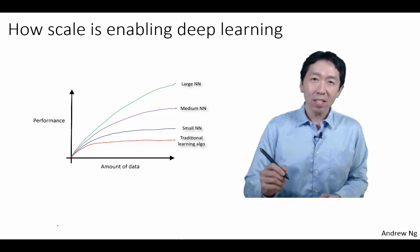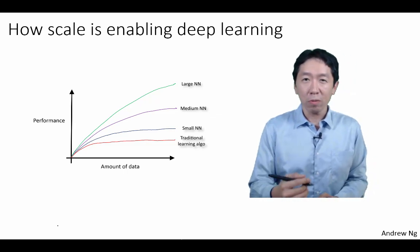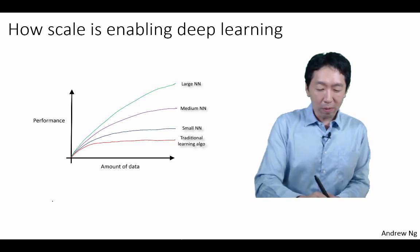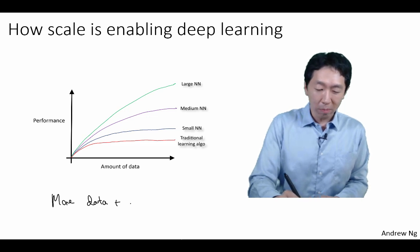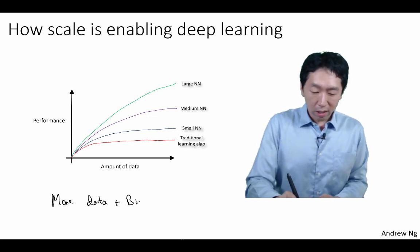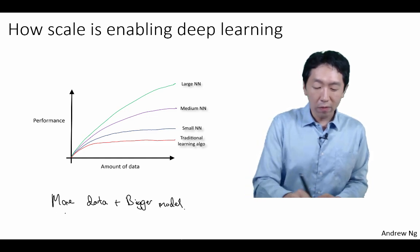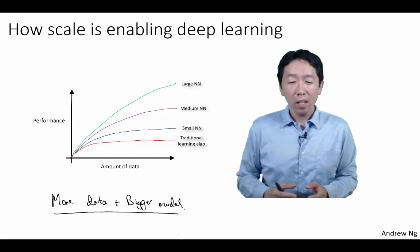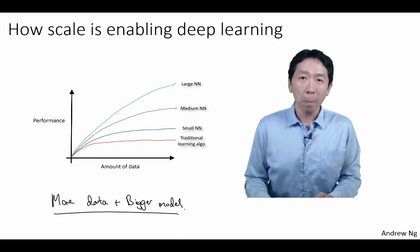Before I wrap up, just to mention, it turns out today that one of the most reliable formulas, one of the most reliable ways to get good performance on a machine learning problem is this maybe relatively simple, or seems simple but hard to implement, formula of having lots of data and training a huge model. And if you're able to do both of these things, often that's a reliable formula for getting better performance on your task as well.